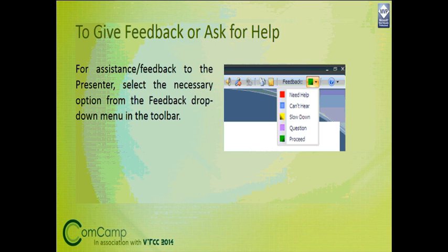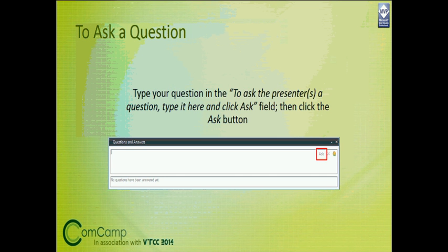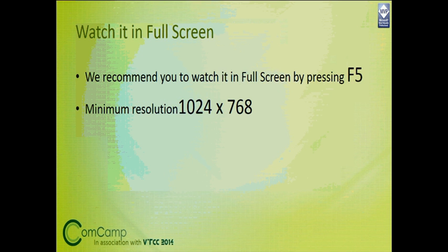To give feedback or ask for help, you can select the necessary options from the feedback drop-down menu in the toolbar. To ask a question, just type your question in the 'Ask' field, then click the 'Ask' button. If you want to watch in full screen, which we recommend, press the F5 button. The minimum resolution should be 1024x768.